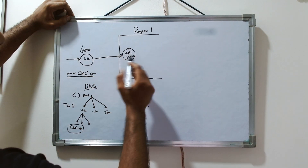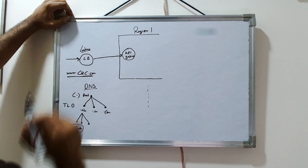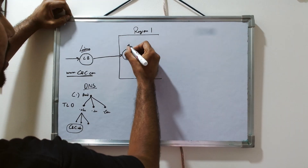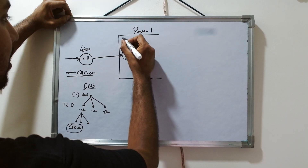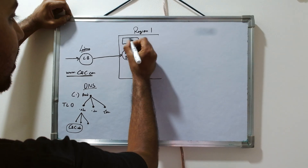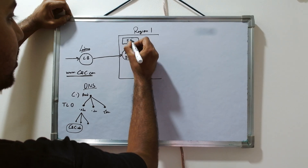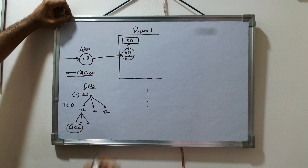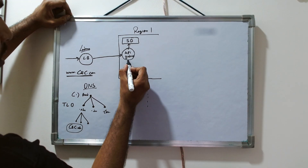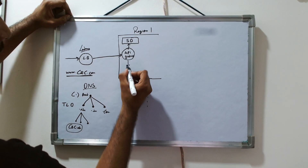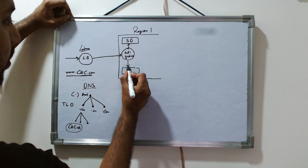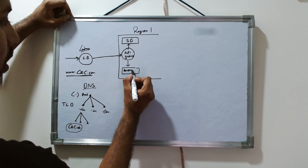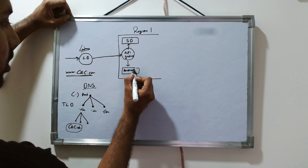Let's say the request goes to Region 1 and this API gateway catches it. The API gateway has multiple functionalities — it handles service discovery and also integrates with an authorization server.